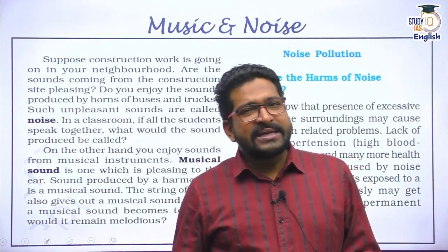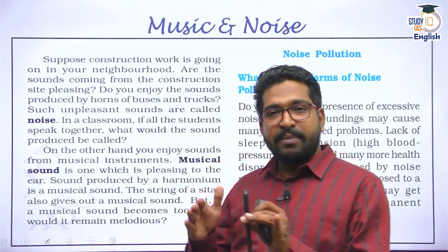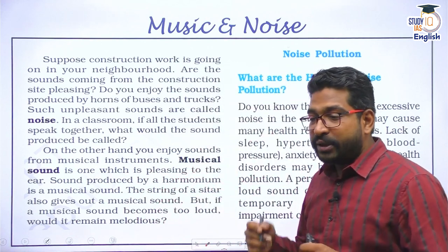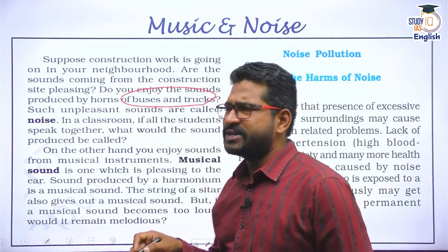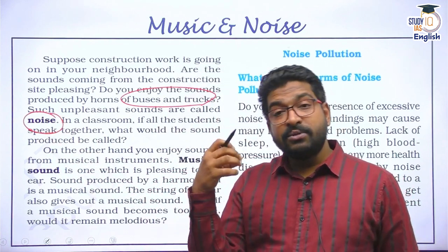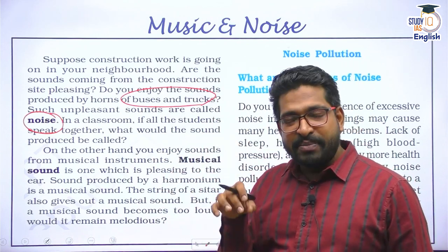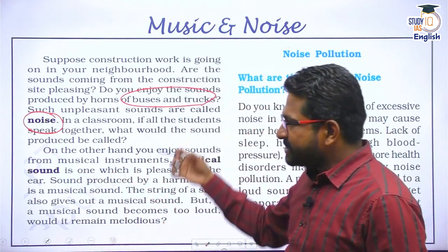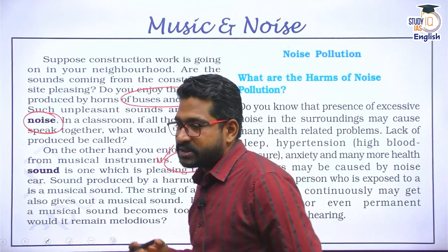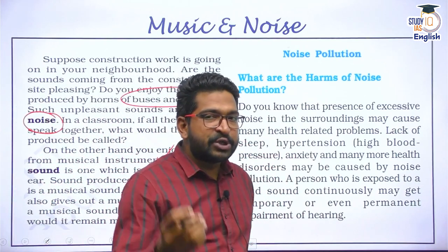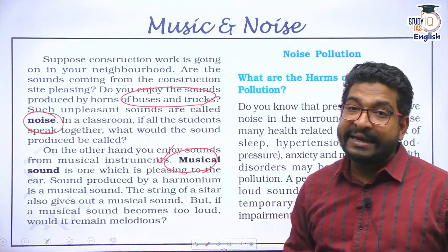There are certain sounds we love — music — and certain sounds that irritate us — noise. Do you enjoy the sound of bus or truck horns? No — that is noise. But we love music, sometimes even loud music. The distinction is: noise is something that irritates and is not pleasing, while music or normal sound is melodious. The loudness and pitch of musical notes are pleasing, whereas factory sounds or horn sounds are irritating — they are called noise.